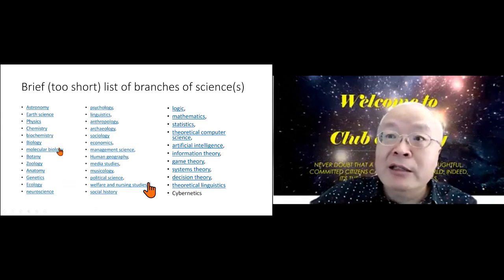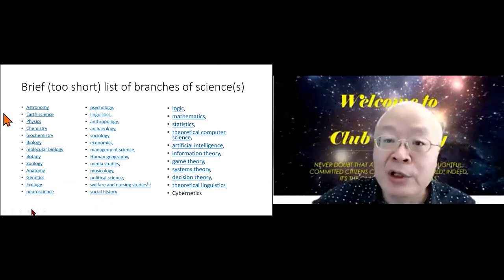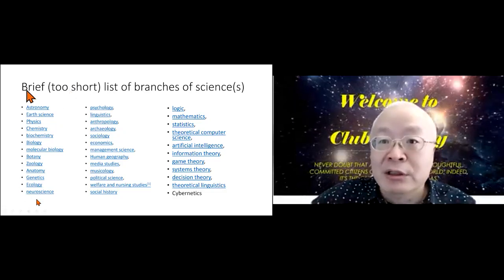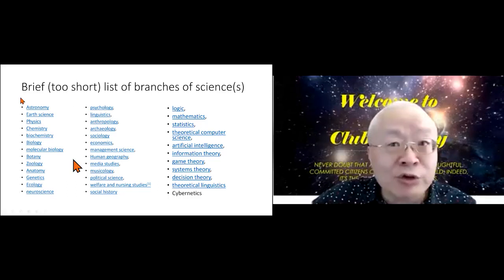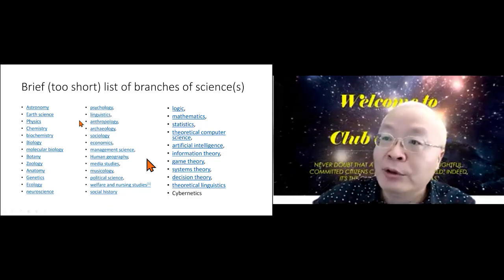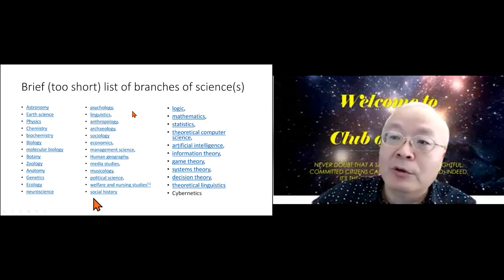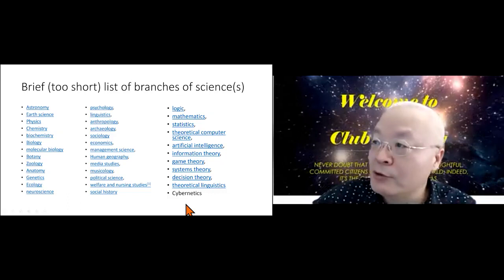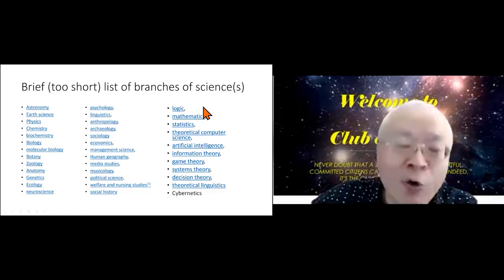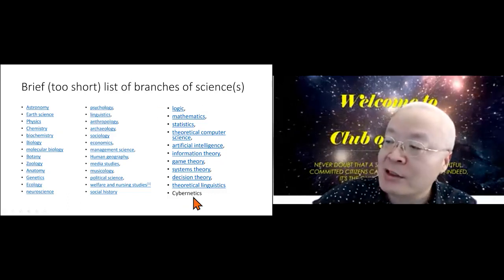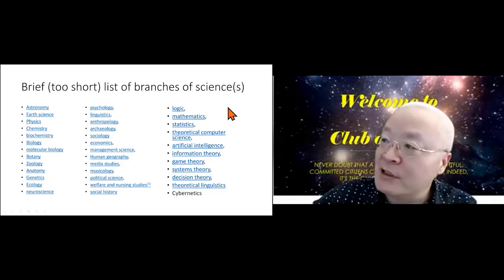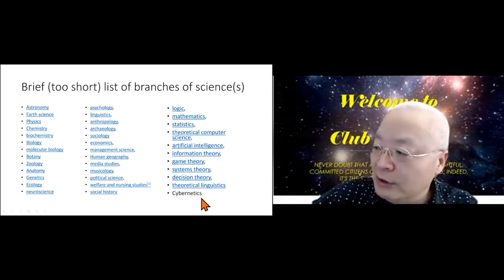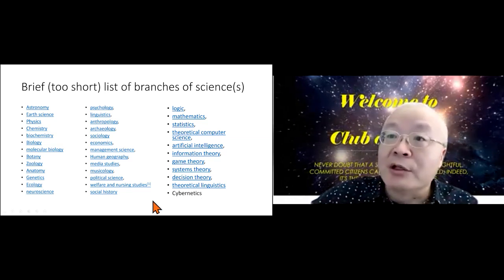Science grows into a huge tree of a lot of branches. You can see this group is what we call natural science. Second group here is what we call social science. And the third group here is what we call formal science. So I put the cybernetics at the end of this line from logic, mathematics, all the way down to linguistics and cybernetics.